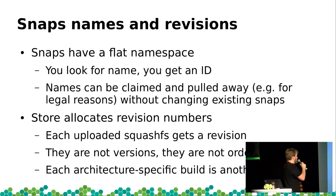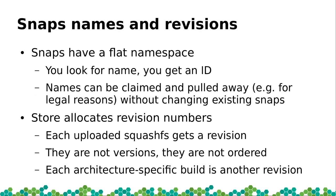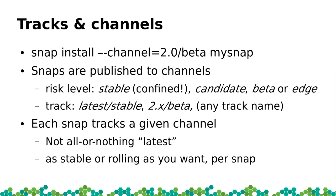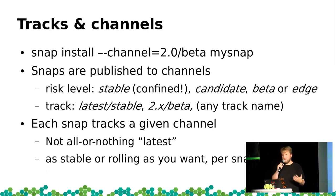Revisions are what the store gives you — they're not version numbers, just identifiers for a given upload. It's your task to put a revision number into a channel: 'in stable I want revision 9, then revision 10.' You can have whatever tracks you like, but there are predefined risk levels that people understand, especially stable which means confined.